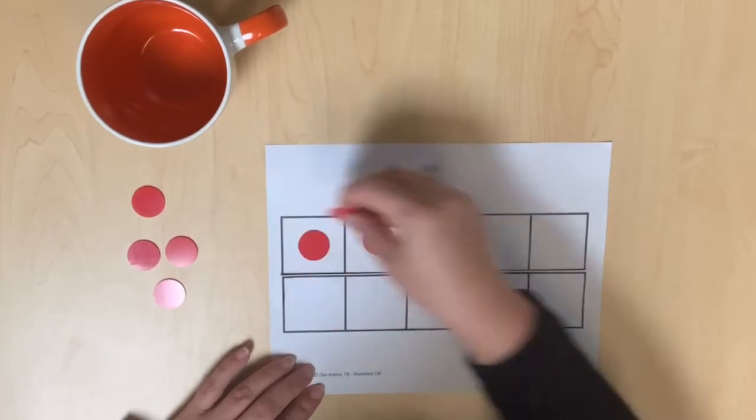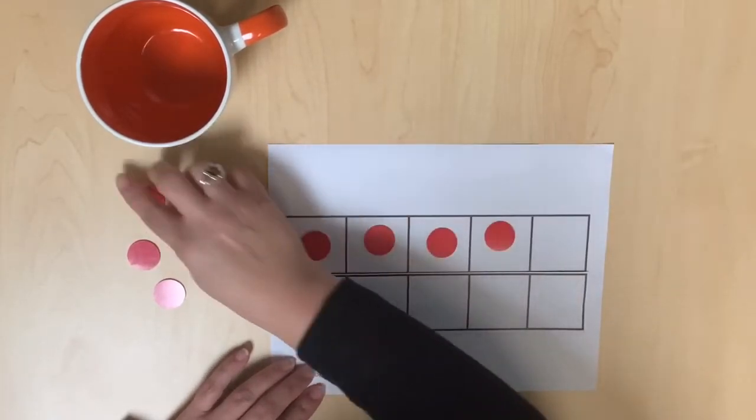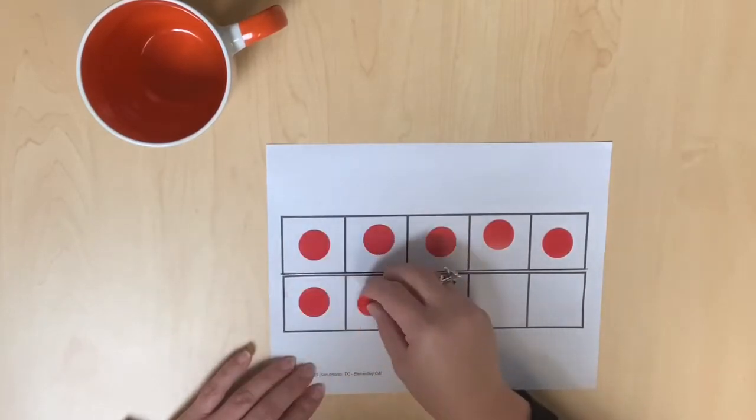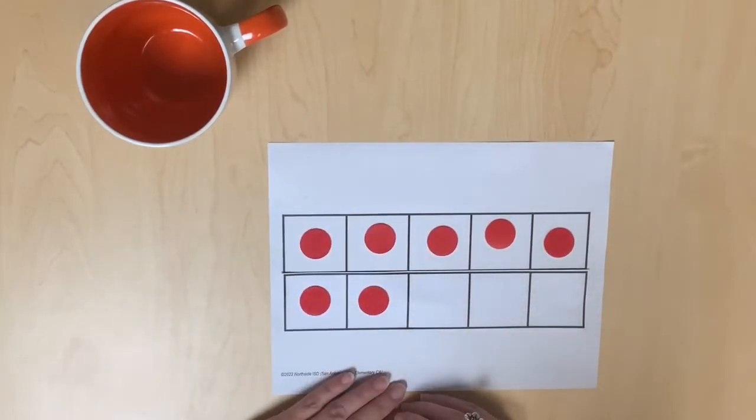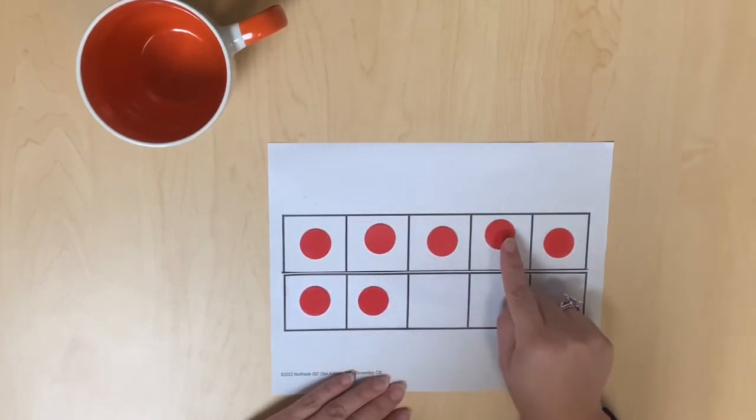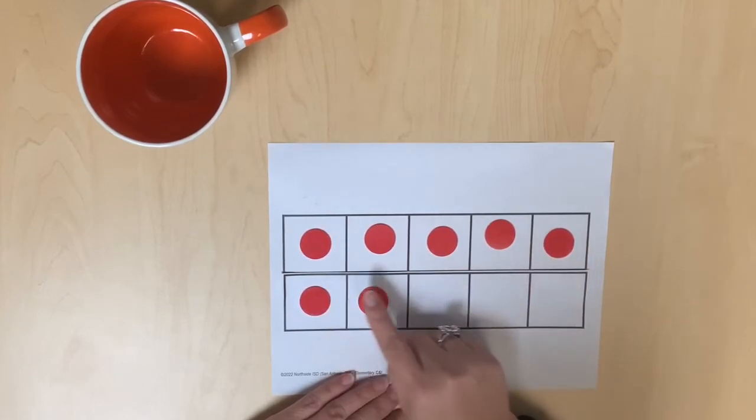It is important to fill the frame from left to right until the entire row is filled. Then continue filling in the next row and show the 1 to 1 correspondence while counting forward: 1, 2, 3, 4, 5, 6, 7.